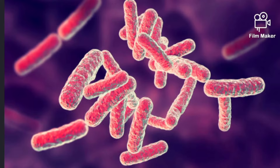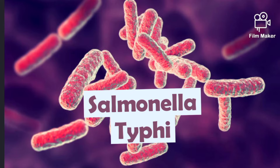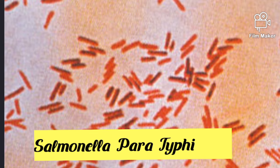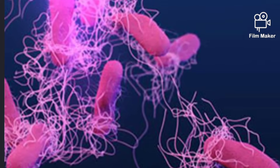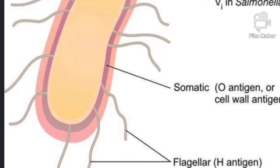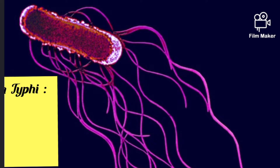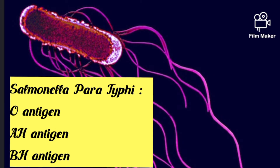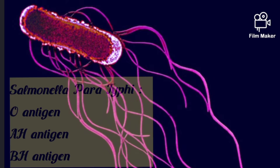Typhoid is caused by a bacteria called Salmonella typhi. Another bacteria called Salmonella paratyphi is also involved in typhoid. Salmonella typhi has two antigens: O antigen and H antigen. Salmonella paratyphi also has three antigens: O antigen, AH antigen, and BH antigen.